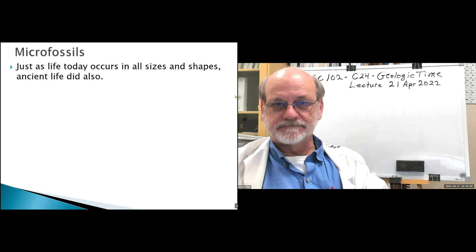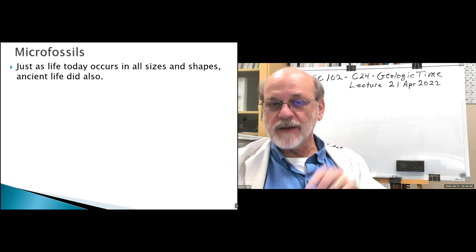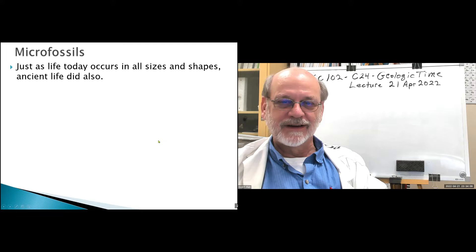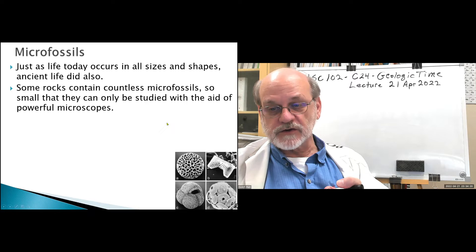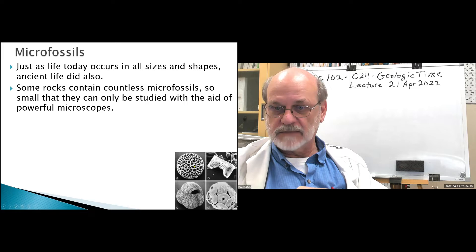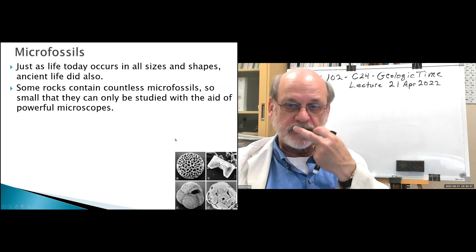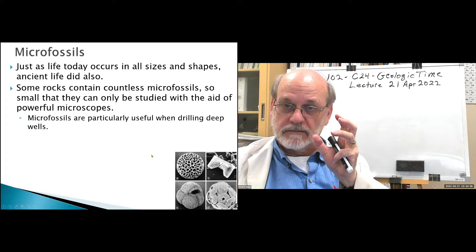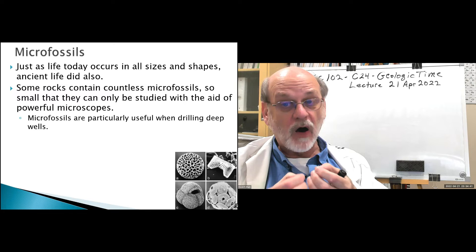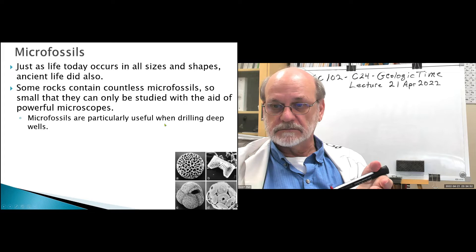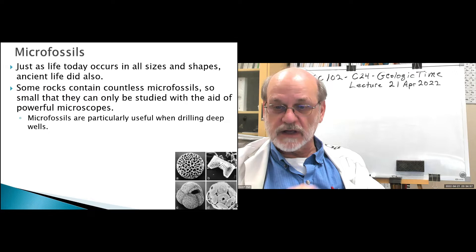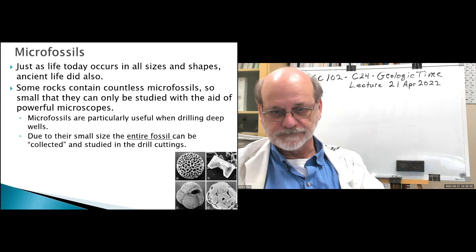Ancient life occurred in all different sizes, from the microscopic up to massive dinosaurs. Microfossils can only be seen under a microscope — they are usually intact entire organisms that are very small. They can be easily brought up from depths through drilling wells — we can pull up rock cores and see these fossils in the rocks.